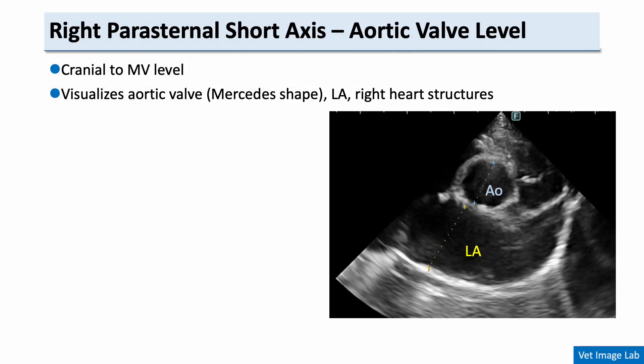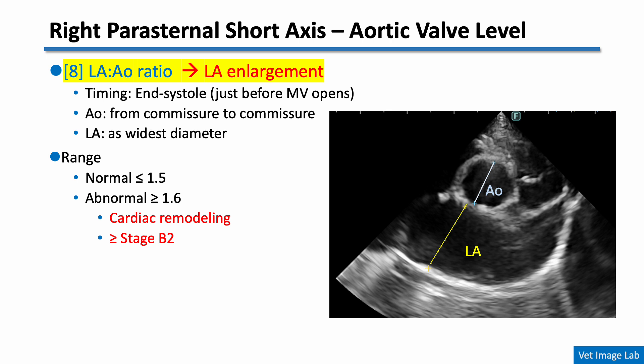Now let's move to the level of the aortic valve. This view is commonly used to assess the left atrium to aorta ratio, which is an important index for evaluating left atrial enlargement. At end-systole, the aortic diameter is measured from commissure to commissure, and the left atrial diameter is taken at its widest point. A ratio of 1.6 or higher suggests cardiac remodeling and supports a diagnosis of stage B2 or higher in MMVD patients.